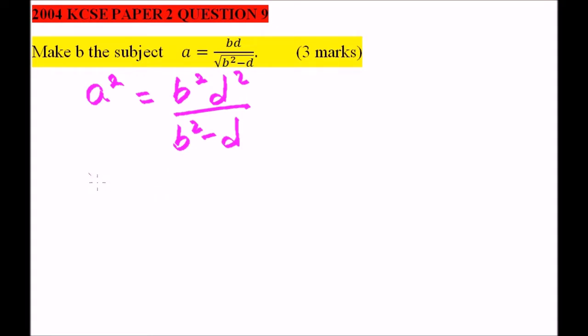Cross multiply, so you have a squared b squared minus a squared d is equals to b squared d squared.